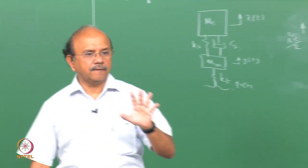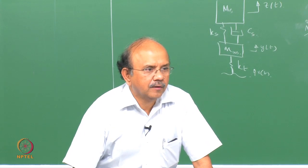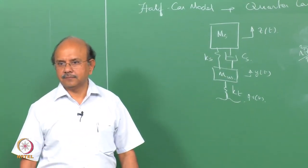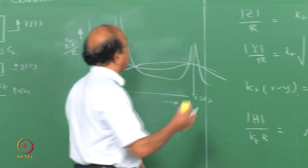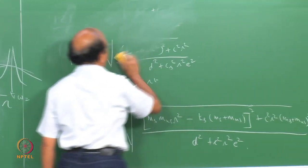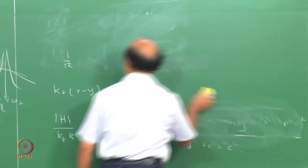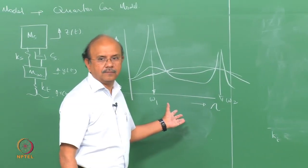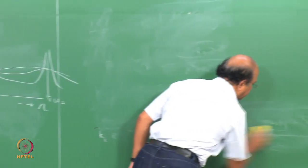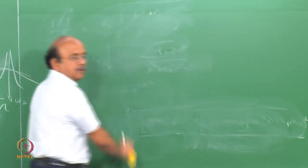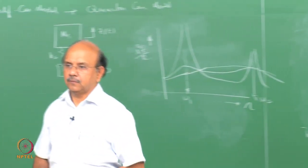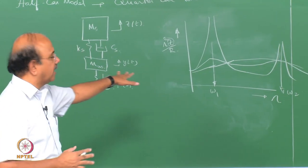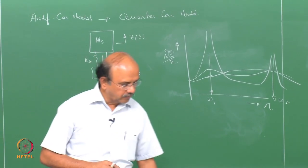In other words, optimizing the suspension — especially the shock absorber — is not a trivial task because of this kind of graph, where behavior is not the same at all frequencies: one compromise results in an increase at another place and vice versa. In order to understand this, we are now going to see how we get this graph — that is going to be my derivation. You have done this already for a single degree of freedom system, where there is a crossover point with different damping characteristics on either side.